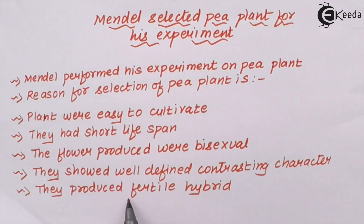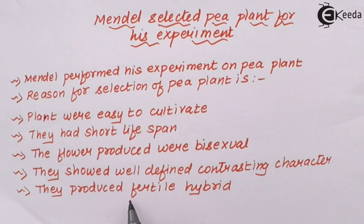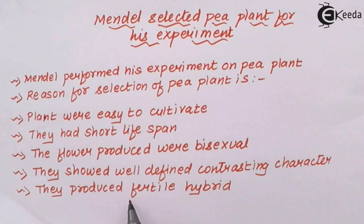Pea plants produce fertile hybrids — meaning the progenies produced in every generation could give rise to another progeny. This is a very contrasting characteristic compared to many other plants, where not every progeny is capable of producing another progeny within a given span of time. But the pea plant had that ability.